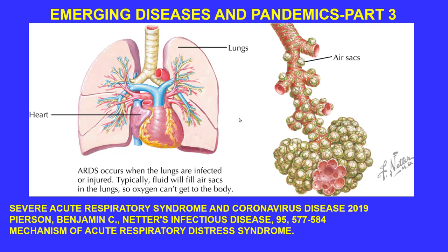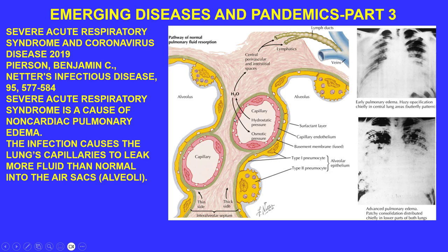With SARS, you get acute respiratory distress syndrome. Looking at the lungs, you have the trachea coming down the carina and into the bronchi, bronchioles, and eventually the alveoli — where a lot of the pathological activity begins. Fluid builds up inside the alveoli, which reduces gas exchange between the blood from the capillaries and the alveoli.